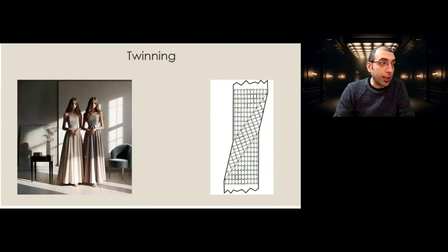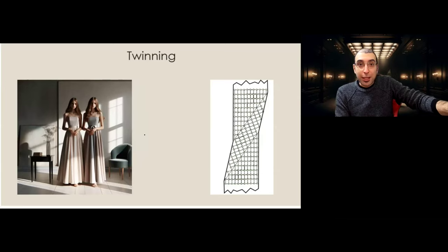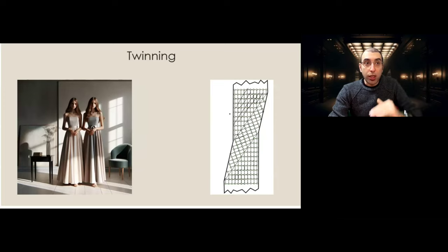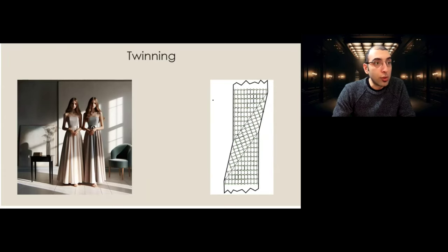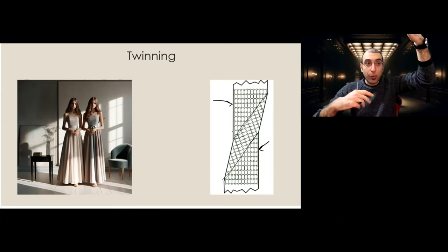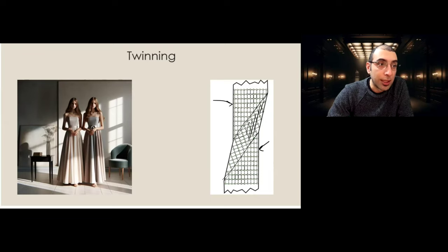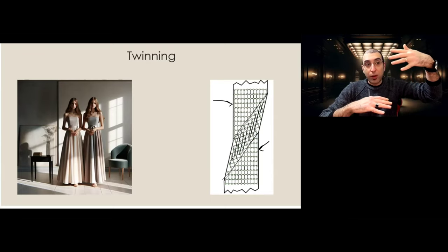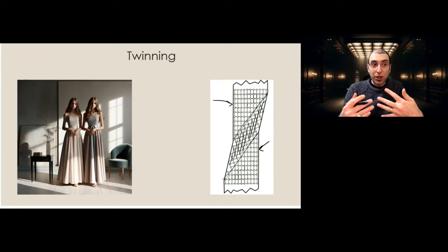The second mechanism is twinning. Just like twins in a picture, in our material we have one side as a mirror image of the other side, separated by a boundary. Above and below this boundary, the atomic planes are a mirror image of each other, making a twin on top and on the bottom. We call this boundary the twin boundary, and this phenomenon we call twinning.